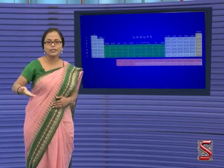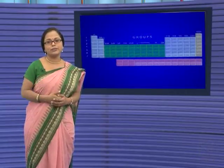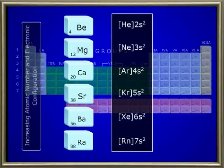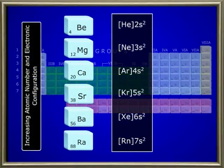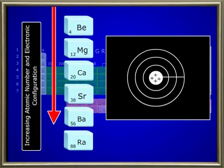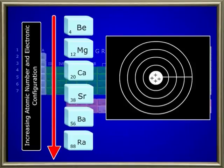The atomic number increases as we move down in the periodic table. With the increasing atomic number and electronic configuration, it becomes obvious that the atomic size also increases from beryllium to radium. The atomic size is actually the atomic radius, measured in Angstroms.